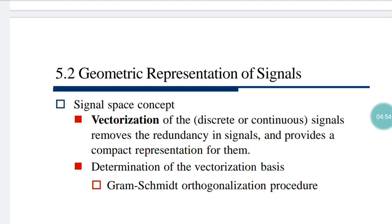The next part is the determination of the vectorization basis. If you want to make a vector in a particular signaling, you have to use the Gram-Schmidt orthogonalization procedure. That particular process of orthogonalization is basically finding out the orthonormal basis (OB) of a given basis.